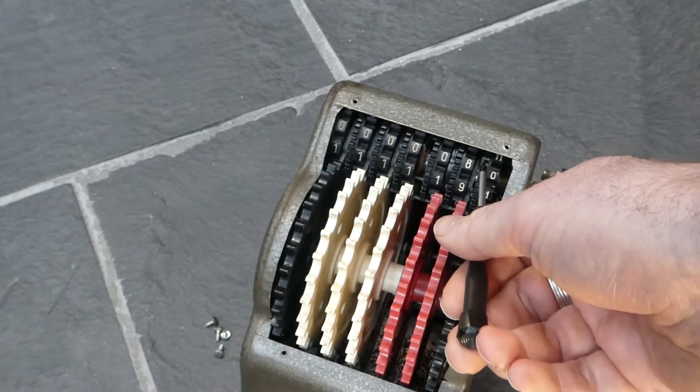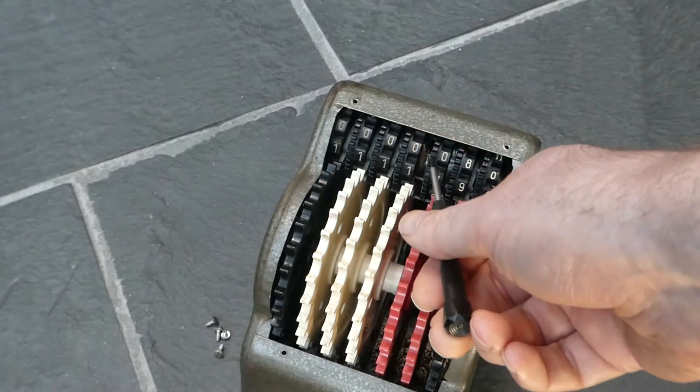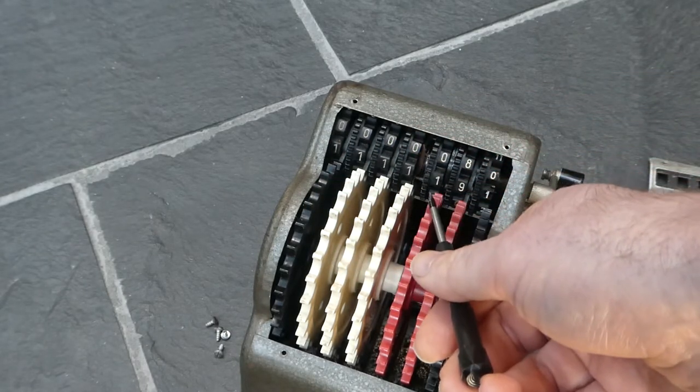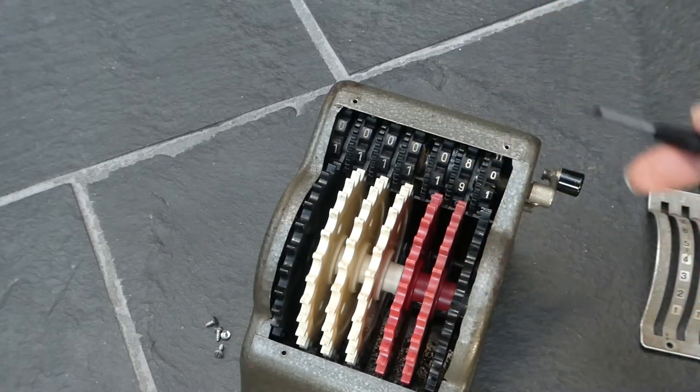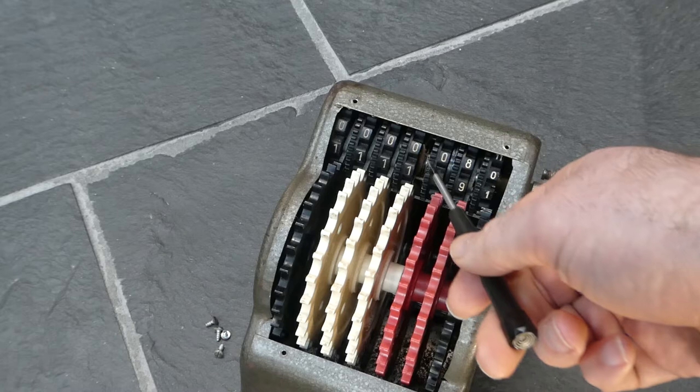So that's the carry mechanism on all these wheels except for this one. This is the Shillings wheel. That has to carry five times during a full rotation. So it doesn't have a single tooth.